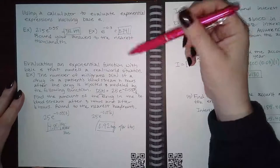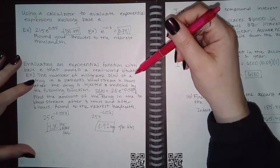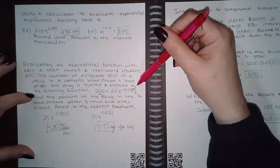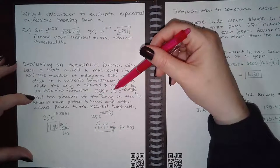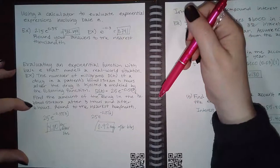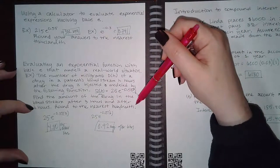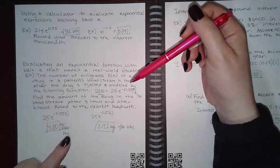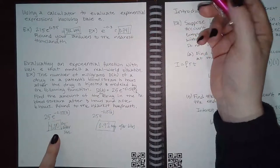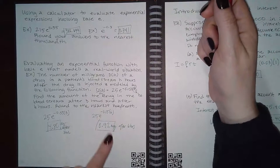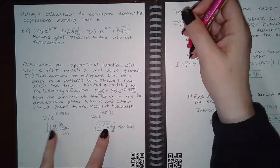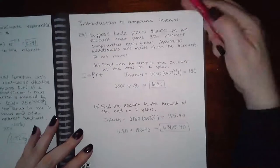For evaluating a base-e exponential function modeling a real-world situation: the number of milligrams d(h) of a drug in a patient's bloodstream h hours after injection is modeled by d(h) = 25e^(-0.55h). To find the amount after three hours, plug in h = 3; after six hours, plug in h = 6. Type each expression into the calculator and round to the nearest hundredth. After three hours you get 4.80 mg; after six hours you get 0.92 mg.